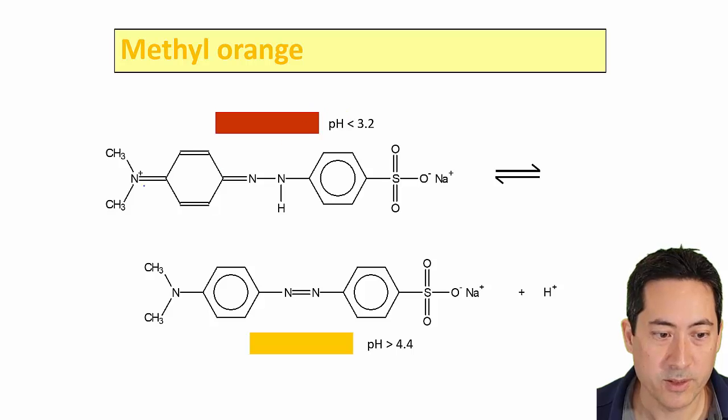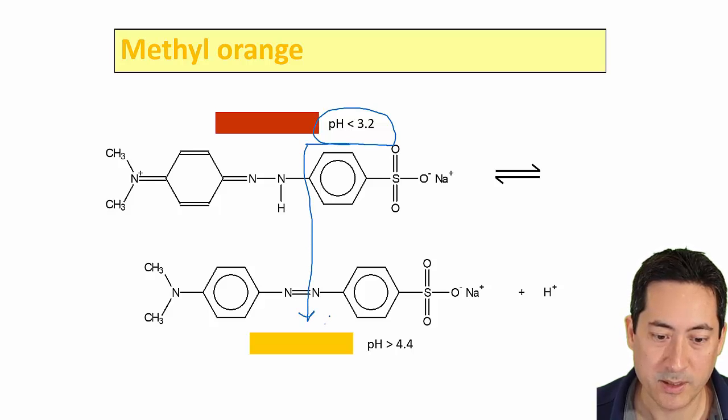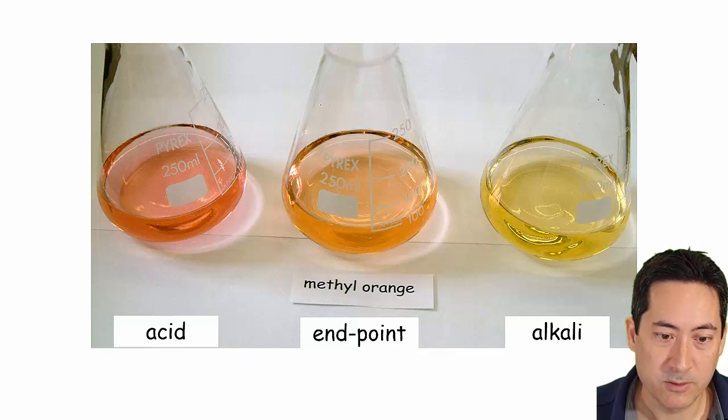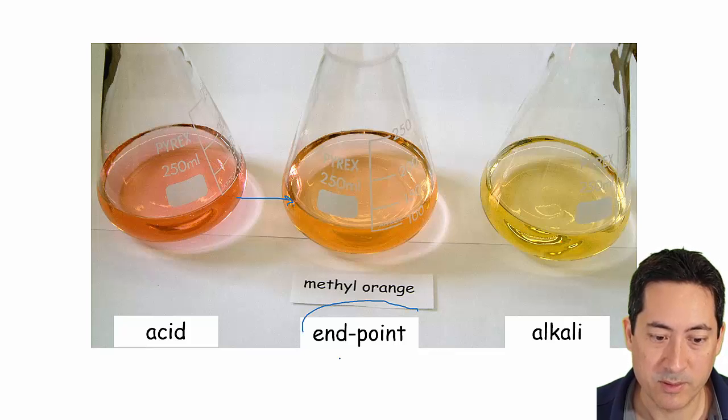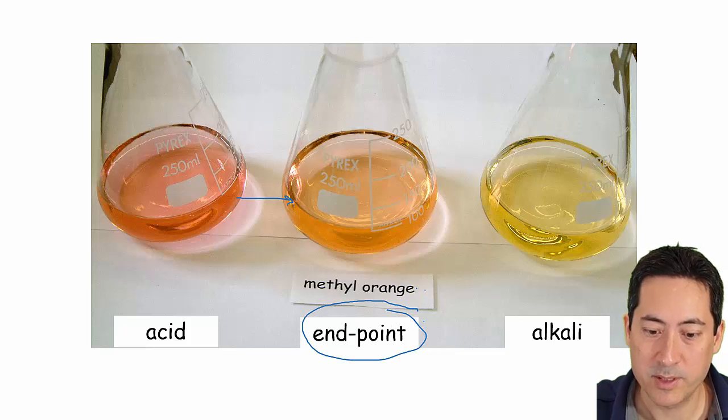Just showing you what the chemicals look like. With methyl orange, when it is at lower pH it's red, and then as it gets to higher pH, more basic, it goes to a yellow. As soon as you see that slight change to an orange, that's your endpoint—that's when you stop and take the volume.